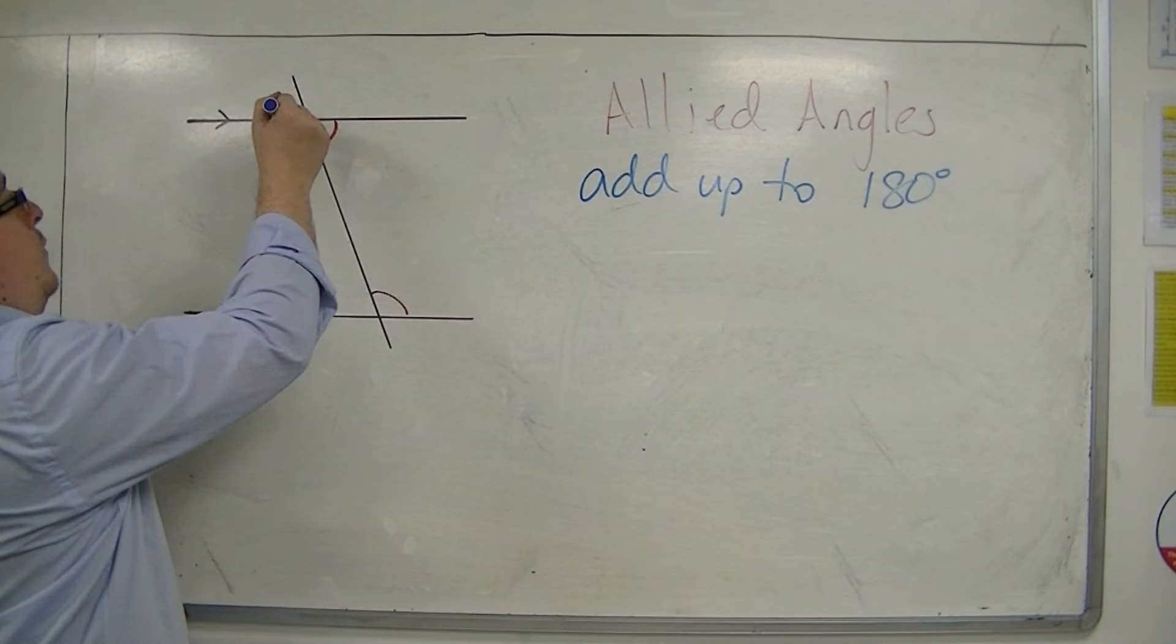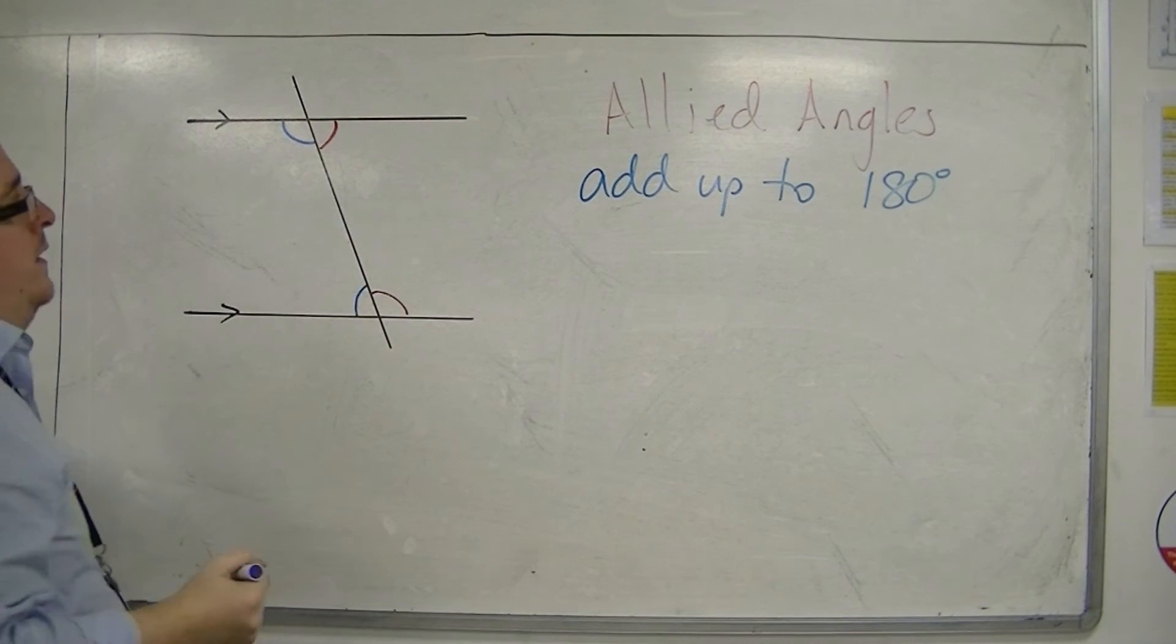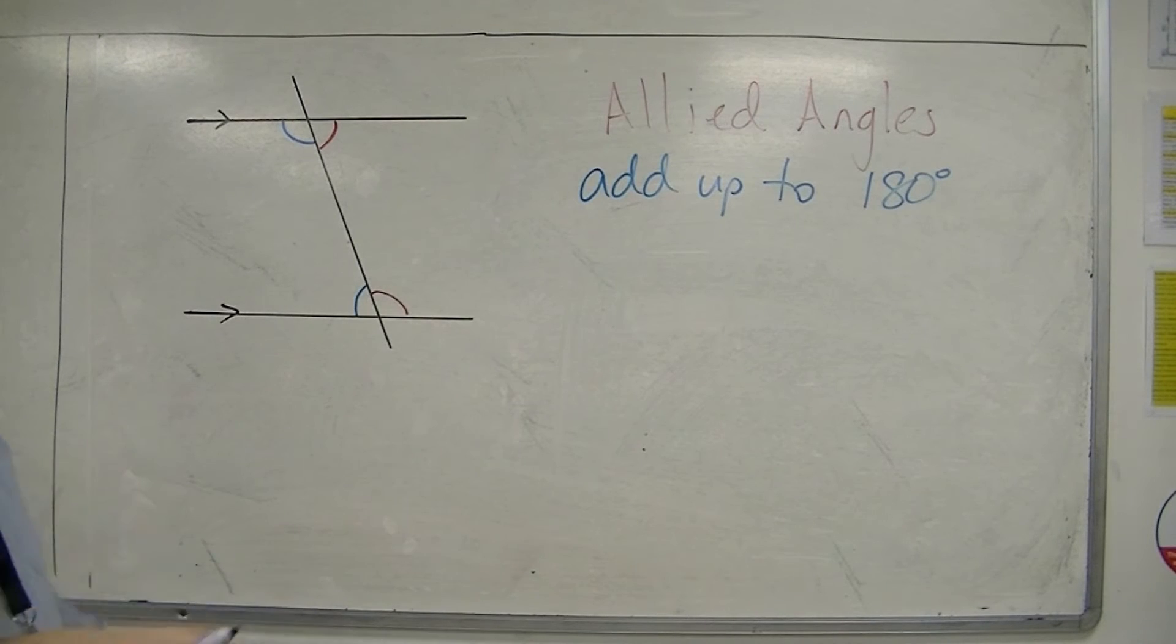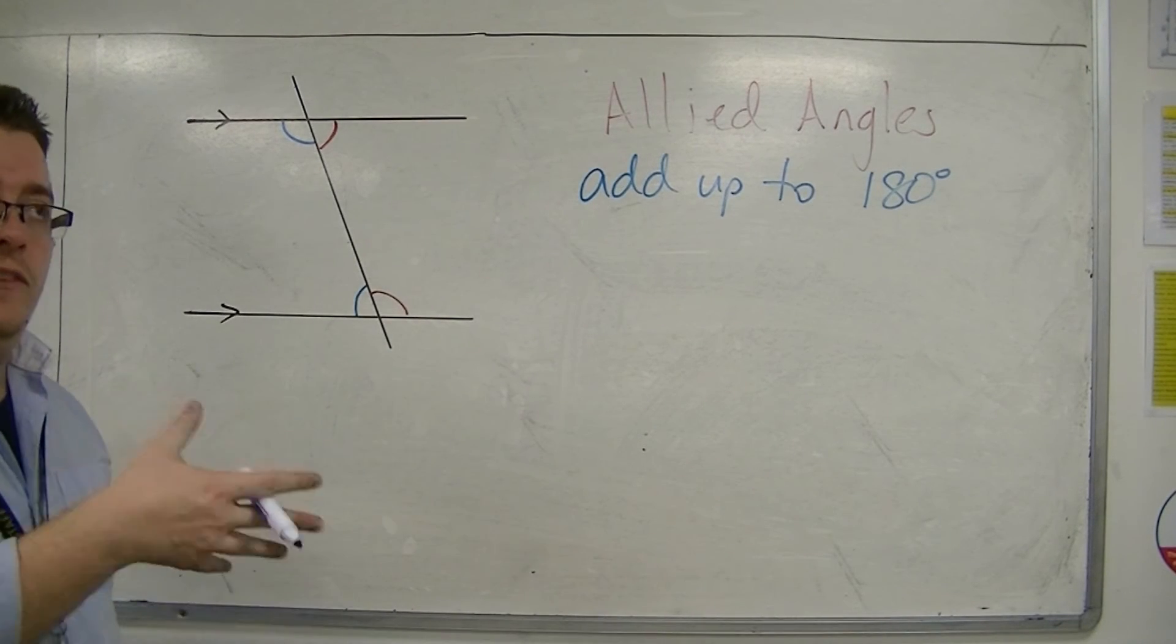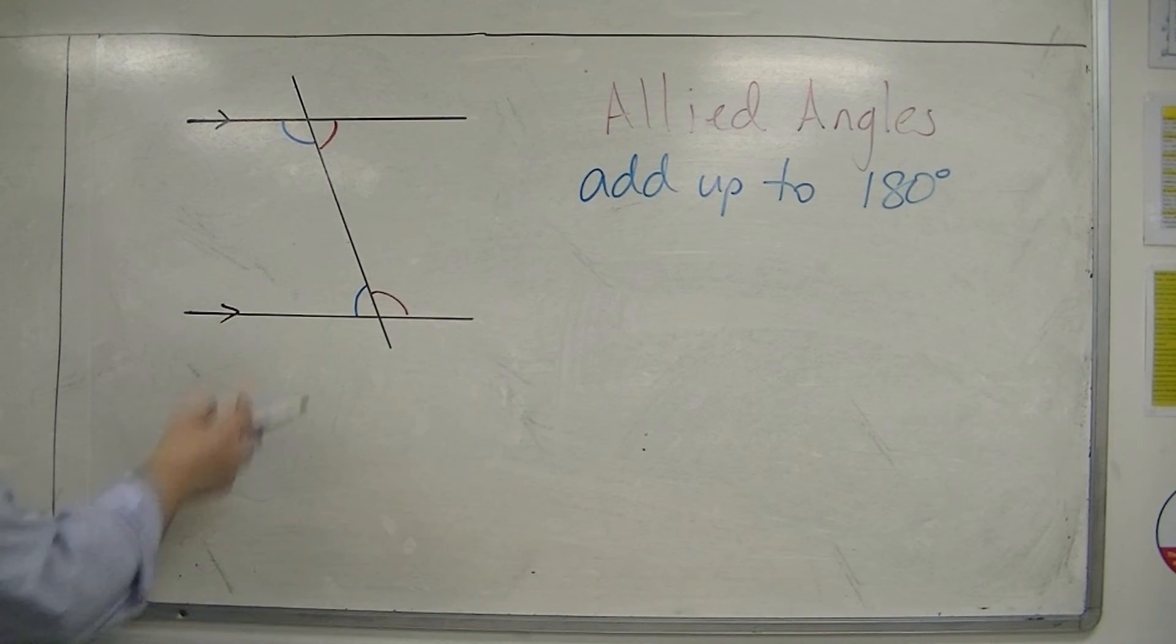And in a similar way, we could also look at these angles here. So these angles are between the parallel sides and on the same side, hence allied. They are on the same side.